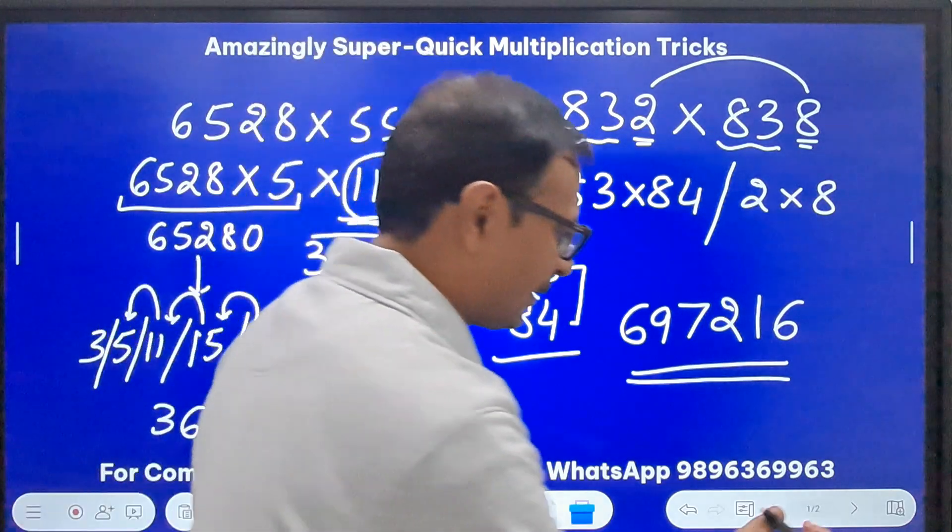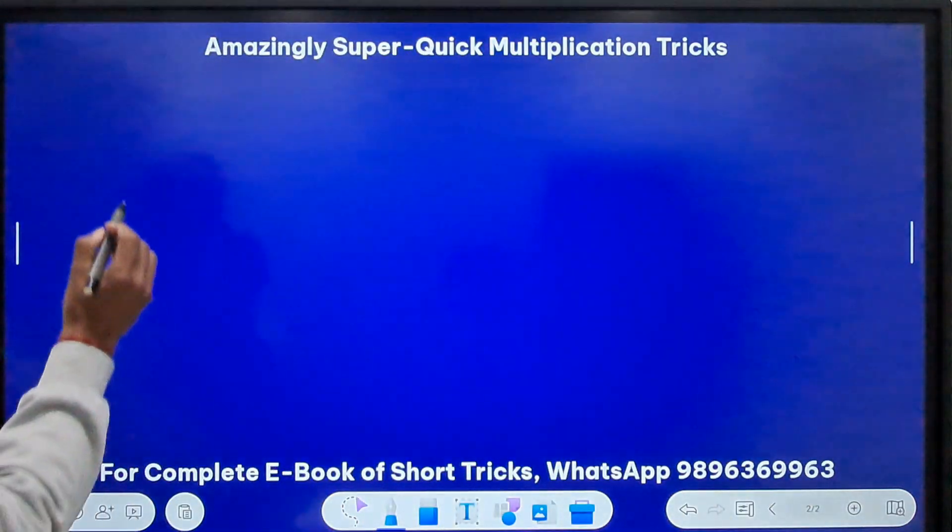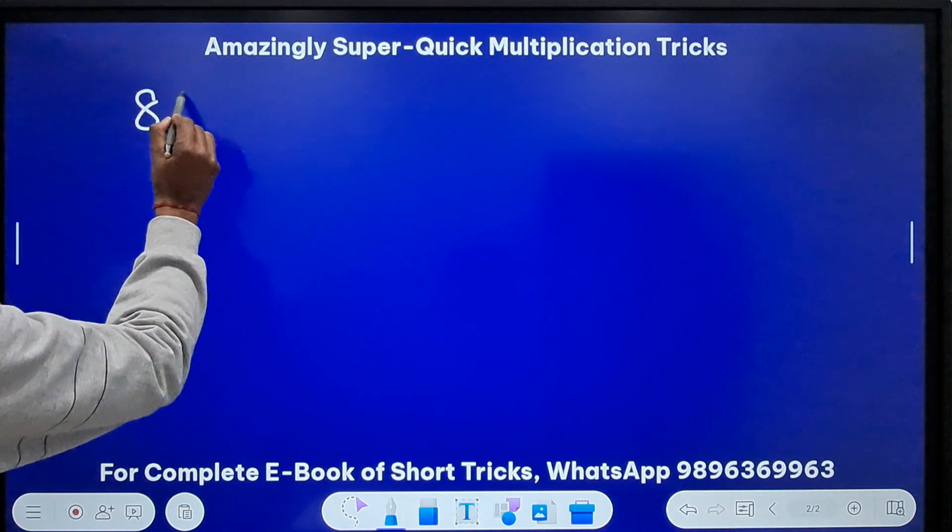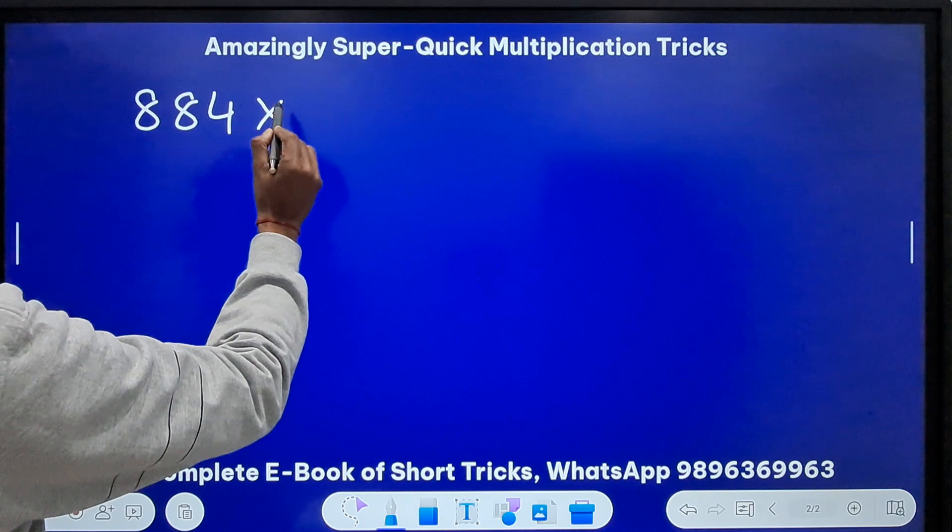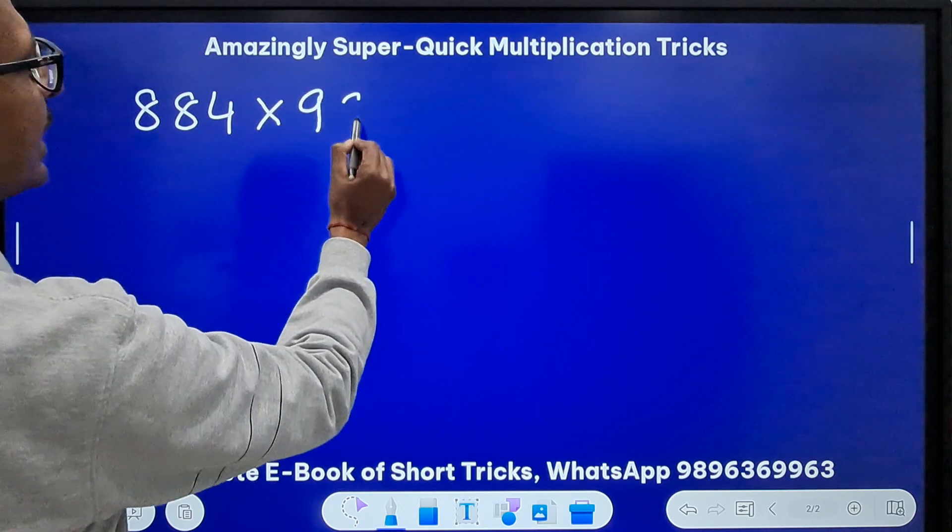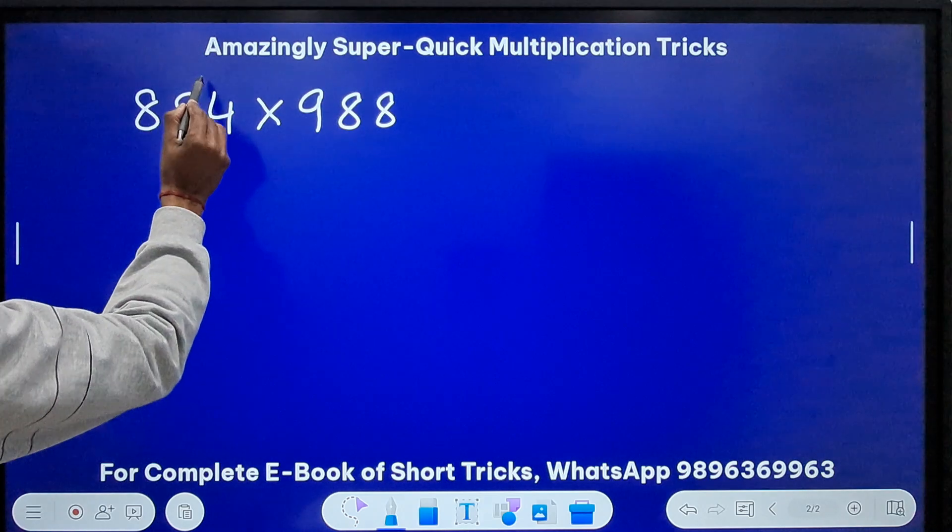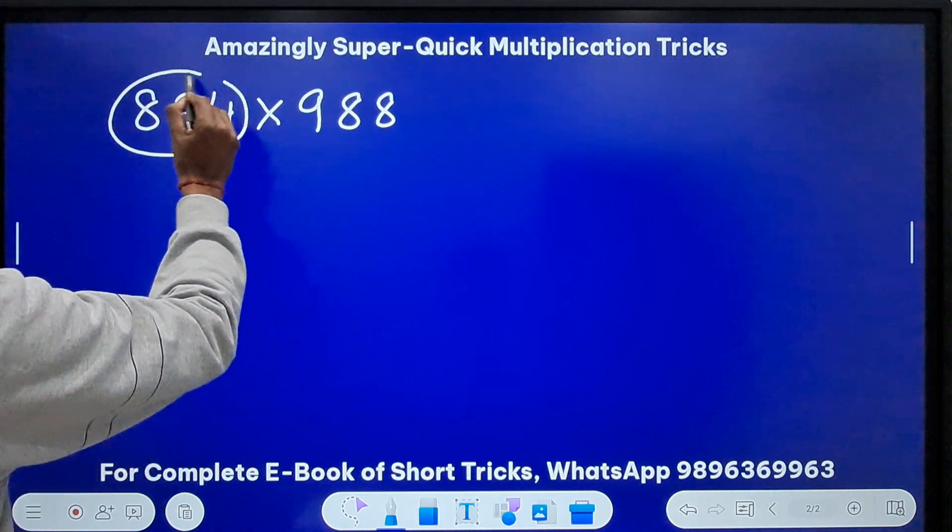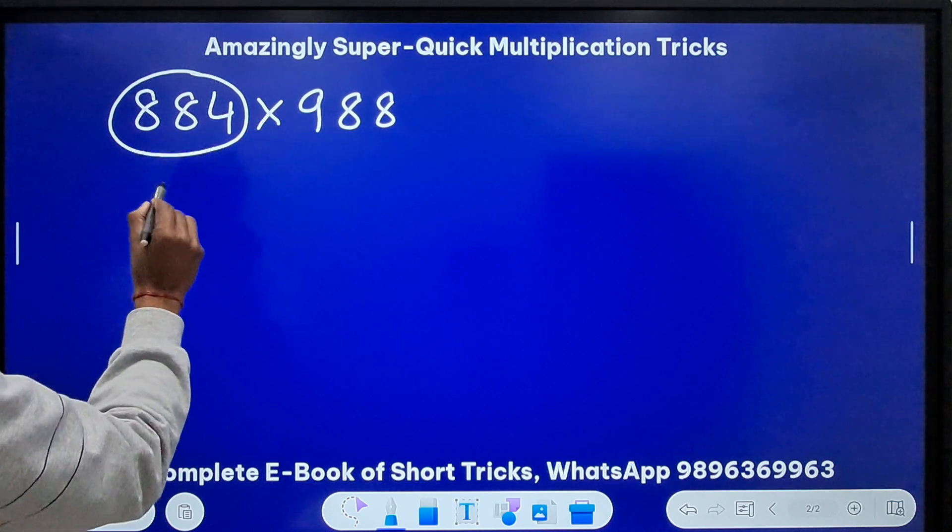Let's see another one, the third trick. Now suppose you have a number like 884 which is a little away from 1000, and I need to multiply it by a number which is near to 1000, like 988. If I can find out how much this number is away from 1000, so 1000 minus 884 I know is how much?